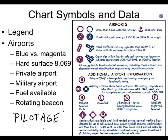Remember what a military airport looks like? If it's round and small, there are two circles on it. If the military airport has a runway longer than 8,069 feet, the only thing that tells you it's military is the label.